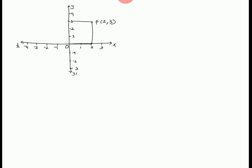We draw a perpendicular from P on the X axis — here I get point M at (2, 0). Then a perpendicular on the Y axis — suppose N, at (0, 3). So point P(2, 3) is on the 1st quadrant.